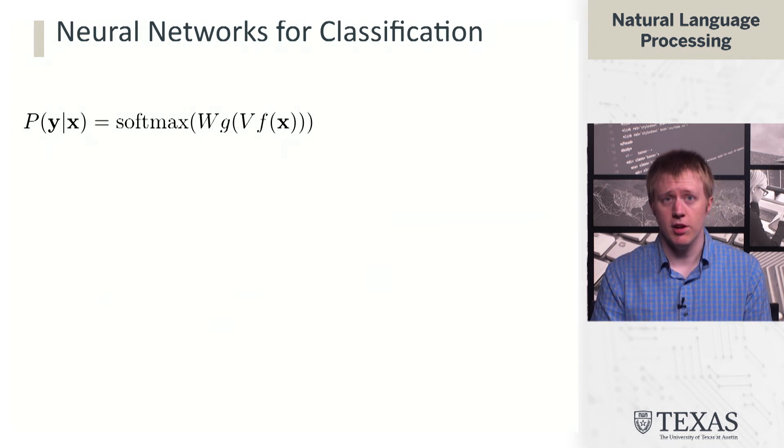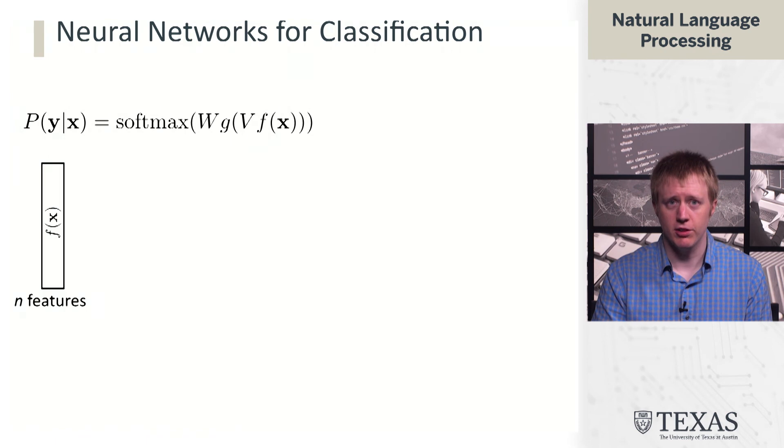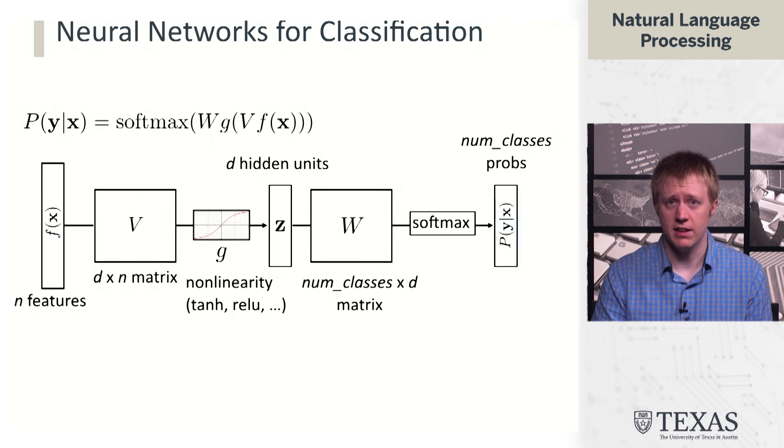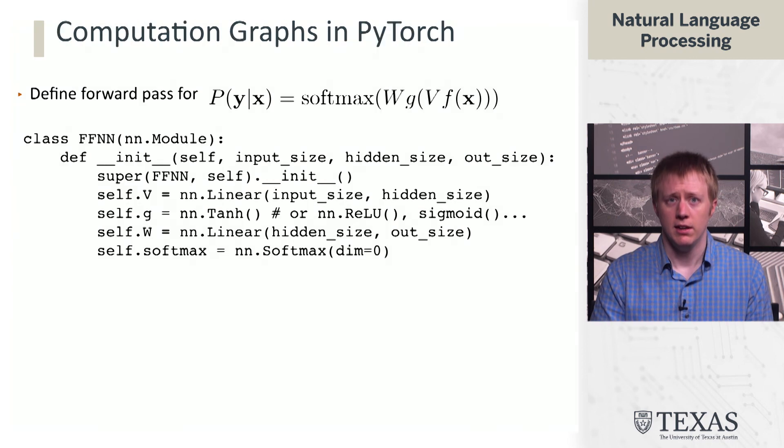Remember that this was our basic neural net, starting with features, going to this vector of hidden unit z, and then going to an output distribution over classes with these two weight matrices, V and W, and one nonlinearity, so one hidden layer here. Let's see how this looks in PyTorch.